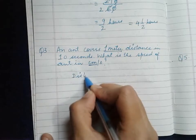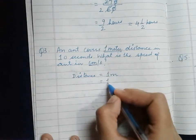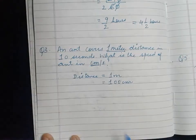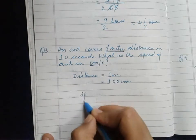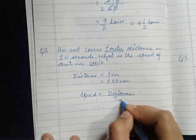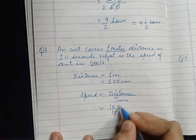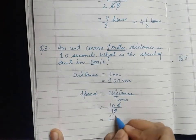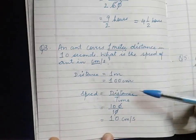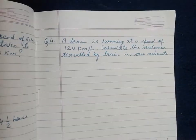So the first step in this question is changing meters into centimeters. Distance is equal to 1 meter, which equals 100 centimeters. Now we find speed: speed is equal to distance upon time — 100 centimeters upon 10 seconds. Zeros cancel, giving us 10 centimeters per second. Because the speed was asked in centimeters per second, we changed the distance from meters to centimeters.